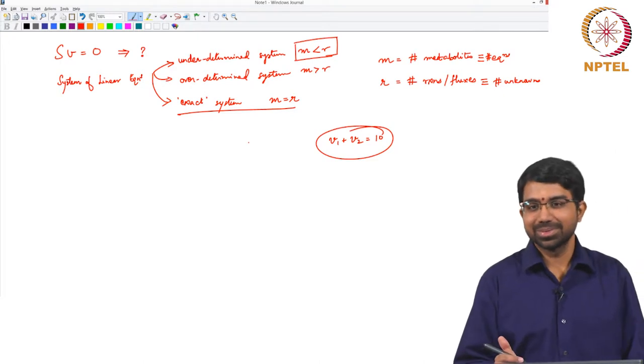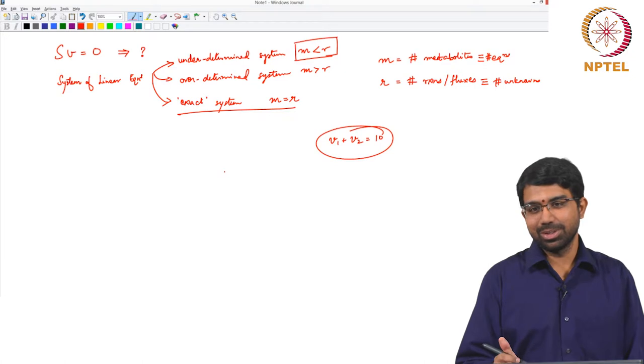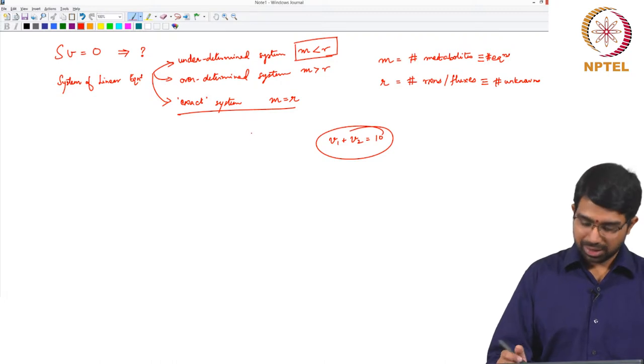Right hand side is 0. So you know that all 0s is a solution, therefore it is the solution.